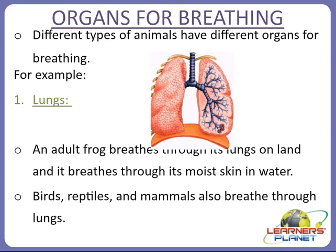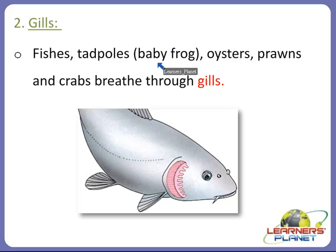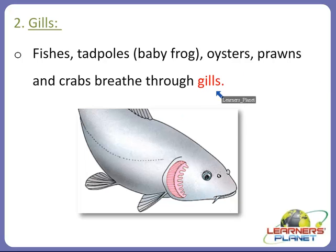Let's move on to another organ for breathing — gills. Gills are considered the breathing organ for animals like fishes, tadpoles (baby frogs), oysters, prawns, and crabs. These are all animals that breathe through gills. As you can see in this picture, the pink color represents the gills present in fishes.